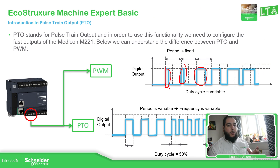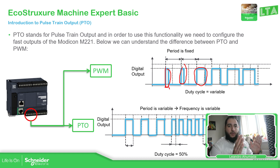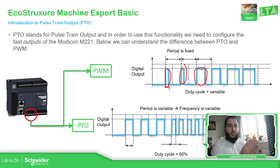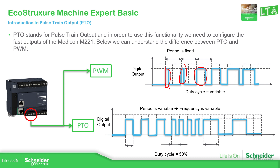As we saw in the previous video on PWM, we can change this fixed period before executing the PWM — you define the period you want. Then what you can change is the duty cycle. Now if we go to PTO, what it does is send pulses to the device that you want to control.